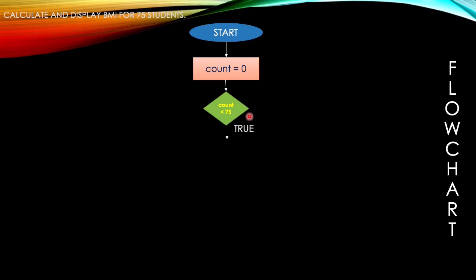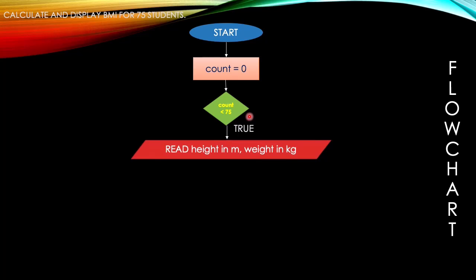If true — zero is less than 75 is true — so we are going to get our input. The shape for input is a parallelogram. Read height in meters and weight in kilograms. This is our input, as we set out in our IPO analysis.